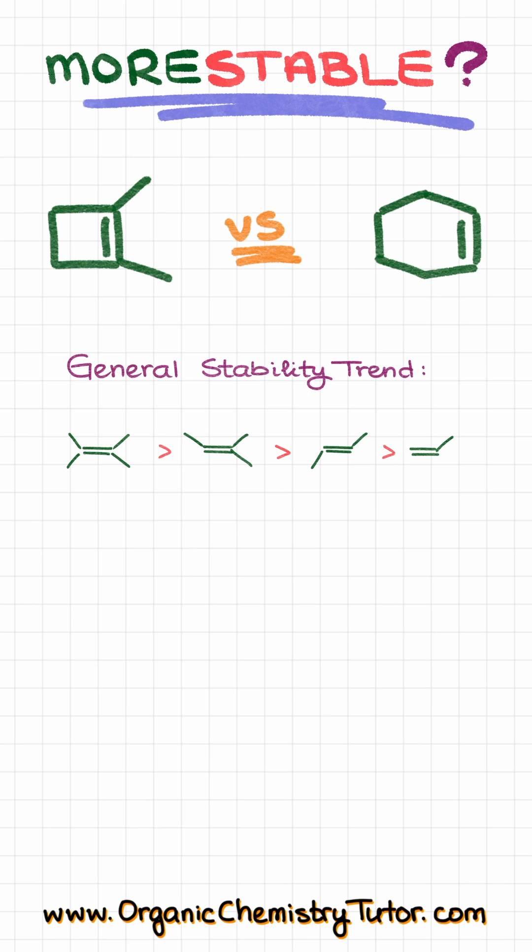So, looking at our two molecules, the one on the left has one, two, three, four substituents on the alkene, while the one on the right has only one, two substituents on our alkene.